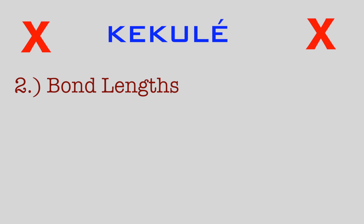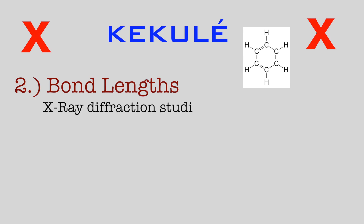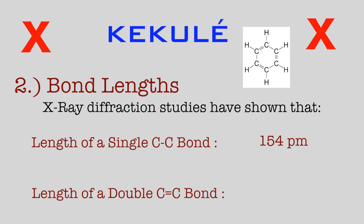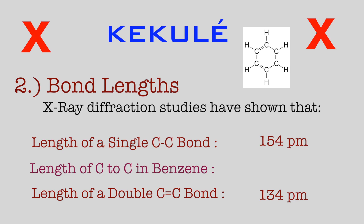The second piece of evidence to disprove the Kekulé model is that X-ray diffraction studies have shown that the length of a single carbon-to-carbon bond is 154 picometers and the length of a double carbon-to-carbon bond is 134 picometers. However, all the carbon-to-carbon bonds in benzene are 140 picometers. If the Kekulé structure were correct, you'd expect three single bond lengths and three double bond lengths, but all carbon-carbon bonds in benzene are the same length: 140 picometers.